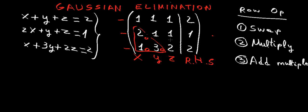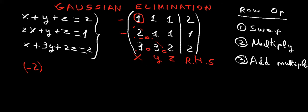We're going to use those operations to get zeros in the positions we were talking about. The first operation is designed to get a zero in this position — we have a 2 here and we need a zero. We change the sign, so the 2 becomes minus 2. We multiply it by the pivot, which is the diagonal element in that column — element 1,1. Then we add that into row 2, and that gives us our new row 2.